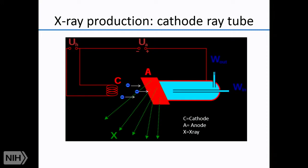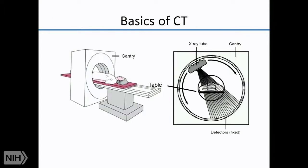We don't want all the x-rays produced, so we collimate the beam using heavy metal such as tungsten or lead to direct x-rays in a specific way. This is the very basics of an x-ray tube — not very different conceptually from what Wilhelm Roentgen did in 1898 when he first observed his wife's hand on an x-ray film using a primitive cathode ray tube.